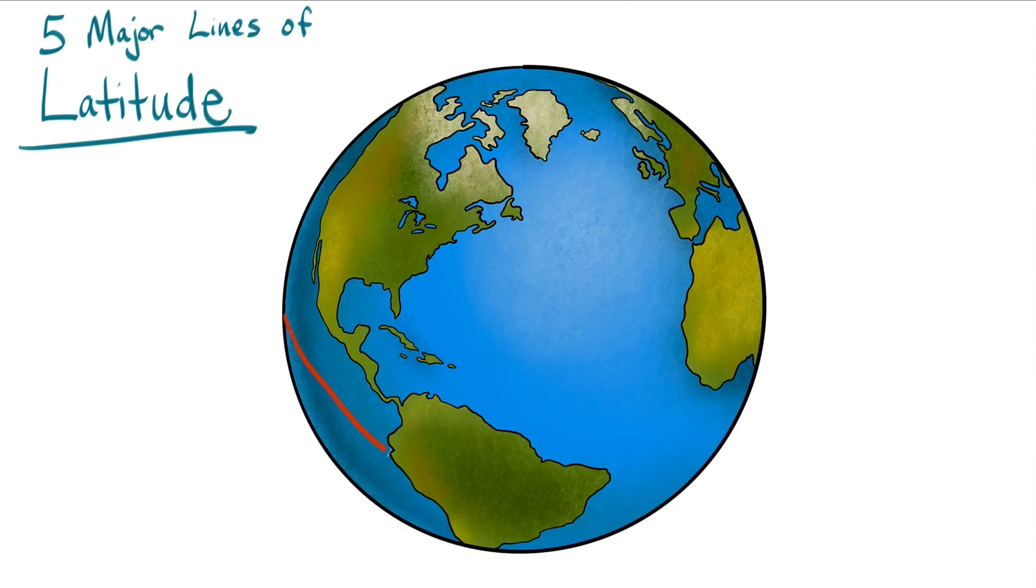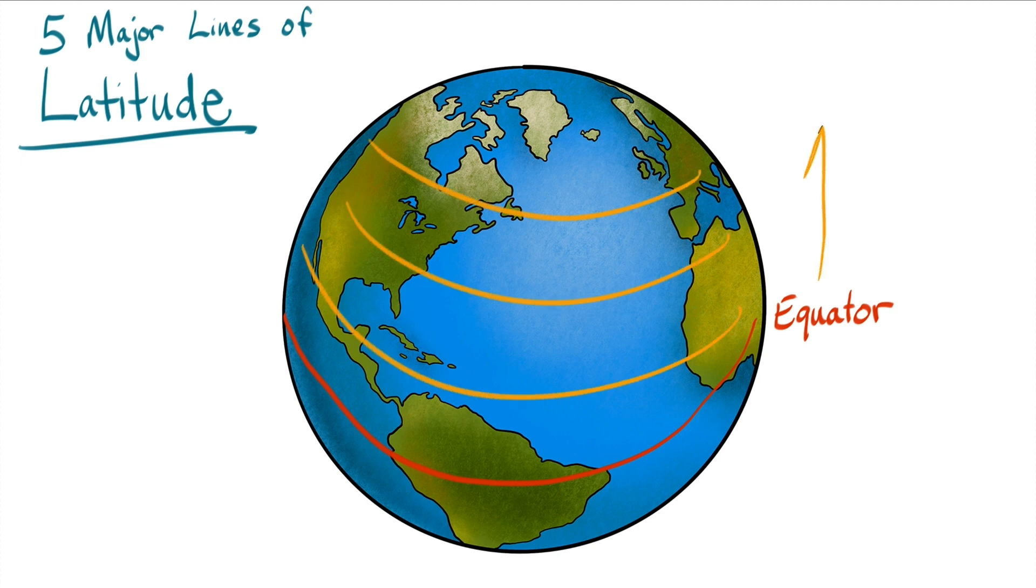The first one we're going to cover is arguably the most important and most well known. It's called the Equator. In a previous video, we discussed how lines of latitude run around the Earth sideways and they measure how far north or south something is. But what if you are not north or south? What if you're directly in the middle of the Earth? Well, then you are on the Equator.